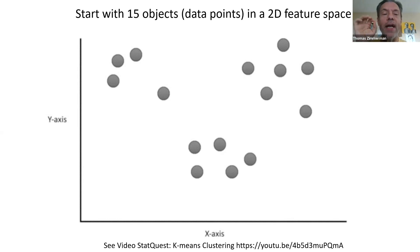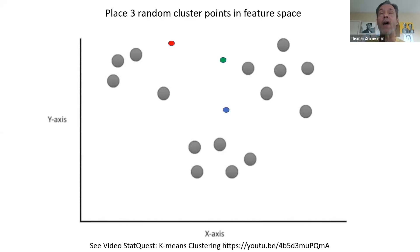We're just randomly going to put three points, three cluster points on this plot. And when I say random, I mean random. So I'm going to drop these three points. So I have three points in the cluster, in the feature space, and I'm going to use those to define three clusters.